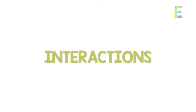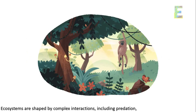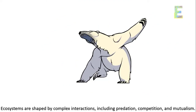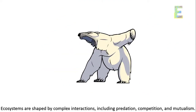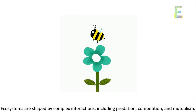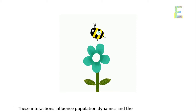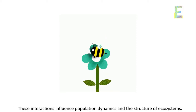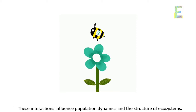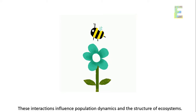Interactions — ecosystems are shaped by complex interactions, including predation, competition, and mutualism. These interactions influence population dynamics and the structure of ecosystems.